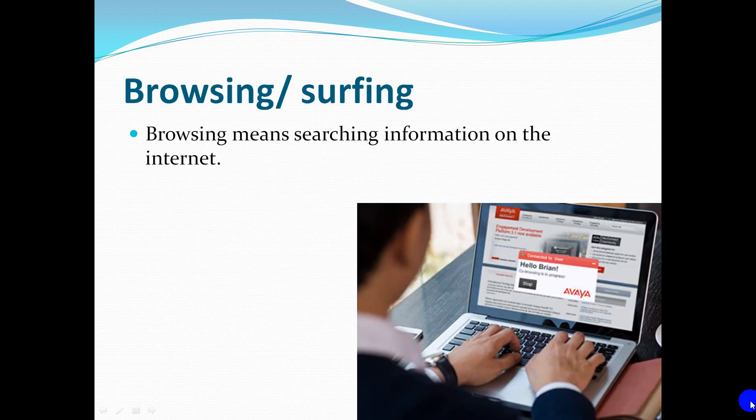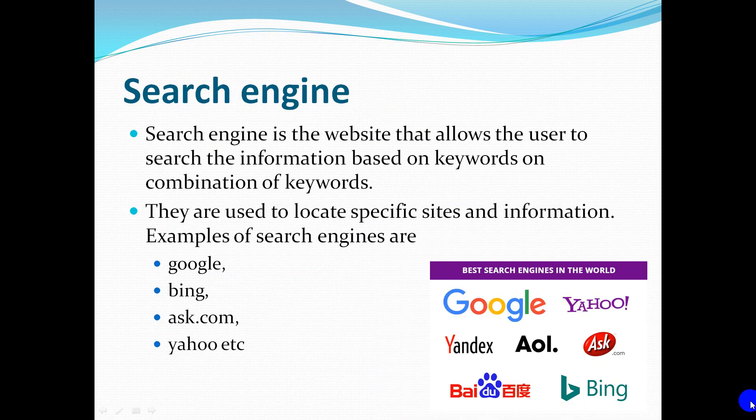Browsing means searching for information on the Internet. A Search Engine is a website that allows the user to search for information based on keywords or a combination of keywords. They are used to locate specific sites and information. Examples of search engines are Google, Bing, Axe.com, Yahoo, etc.